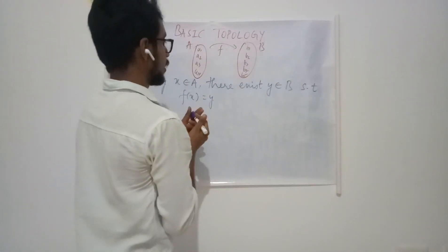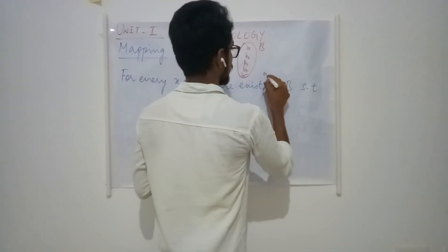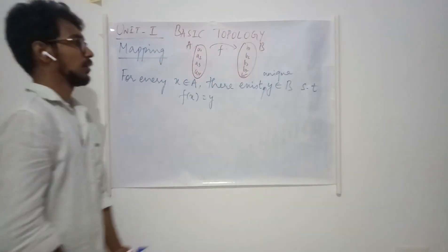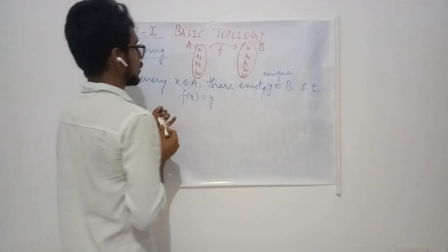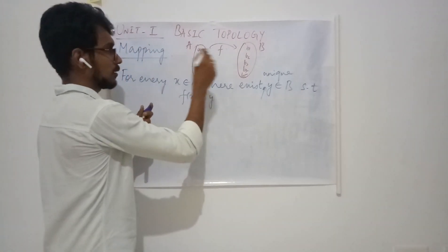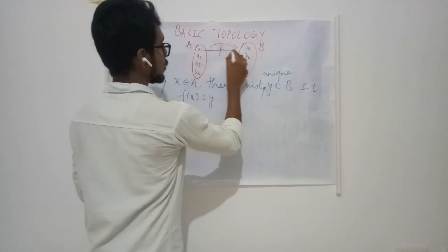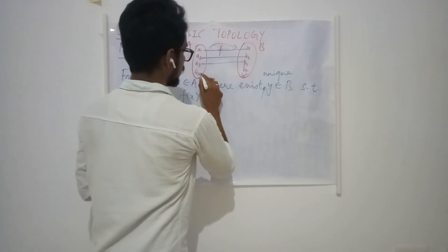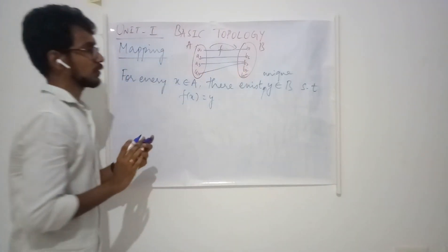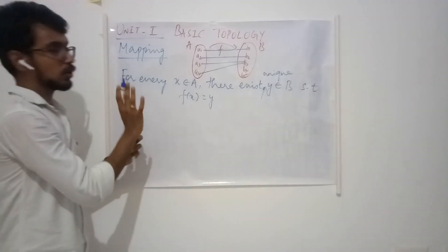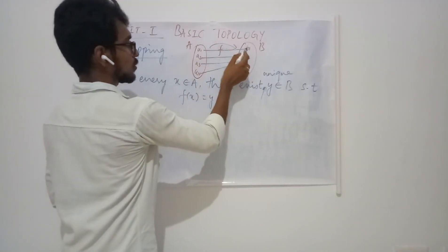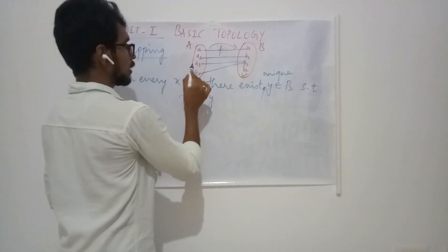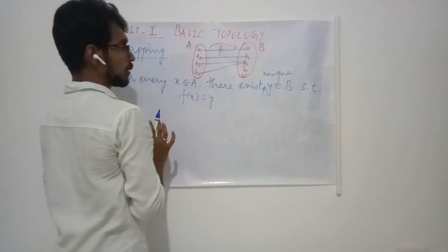There exists a unique y in B. Here you can see that a1 is associated with b1, a2 is associated with b2, a3 is associated with b3, and a4 is also associated with b3.